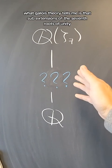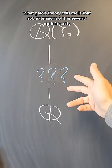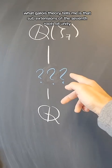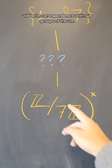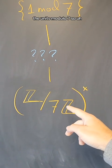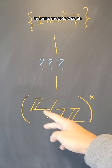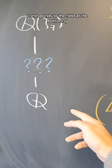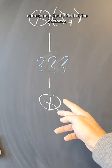Now, what Galois theory tells me is that sub-extensions of the 7th roots of unity will be in correspondence with subgroups of the units modulo 7. So the units modulo 7, the full group, corresponds to the field at the bottom, Q.